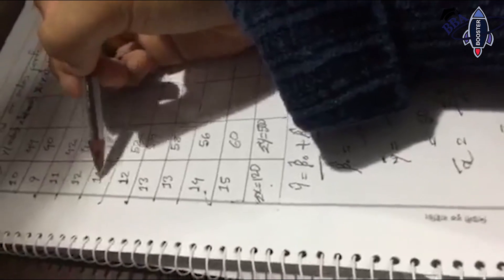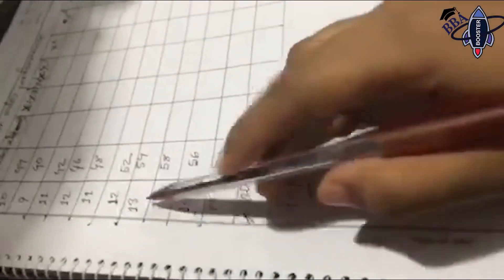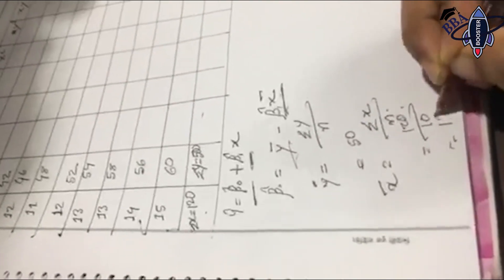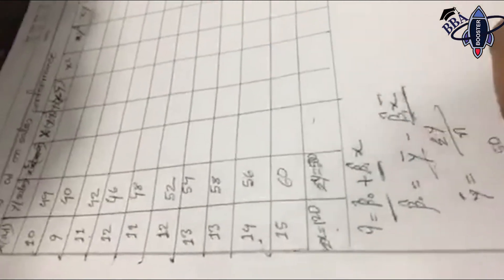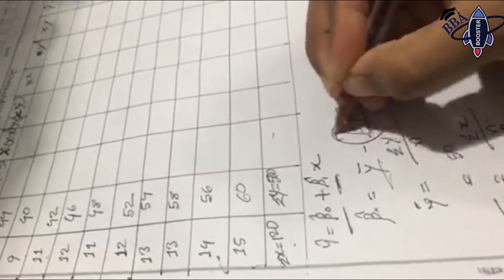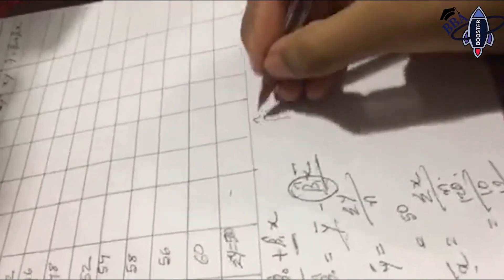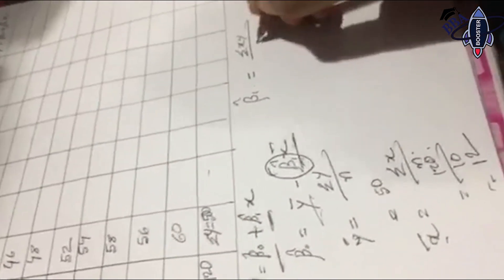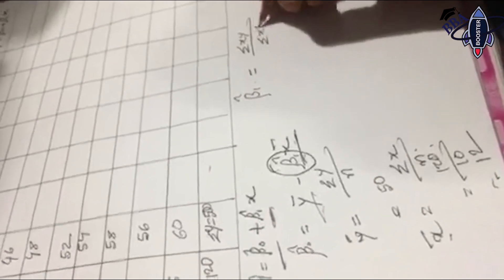Counting observations: one, two, three, four, five, six, seven, eight, nine, ten — so n equals 10. We need the summation of xy and the summation of x-squared for the calculations.